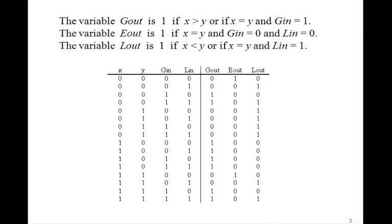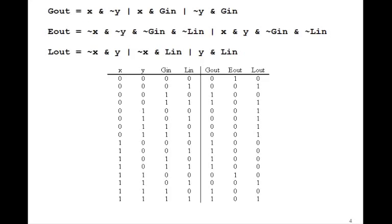Now, you could solve those three equations using Karnaugh maps. If you do that, you'll find that Gout is given by this logic equation. Eout, you can't do anything with Eout, so it's just the two min terms. And Lout reduces to this logic equation.